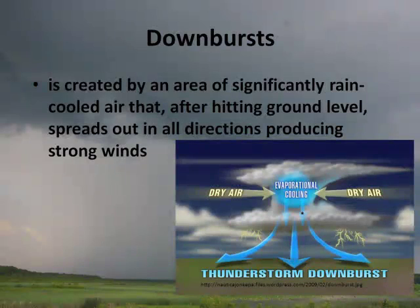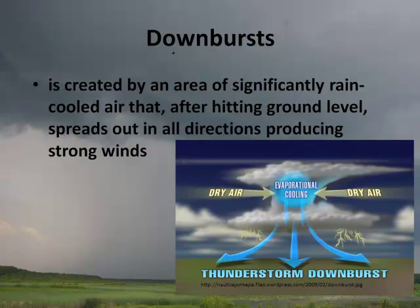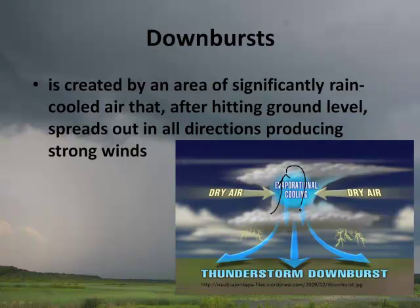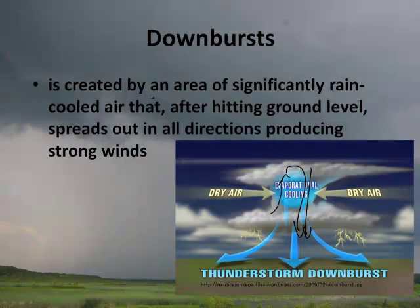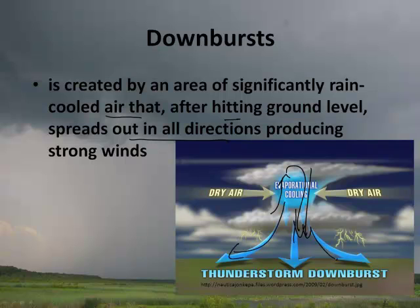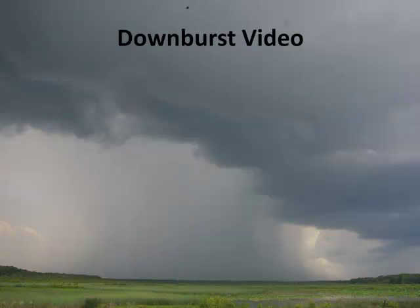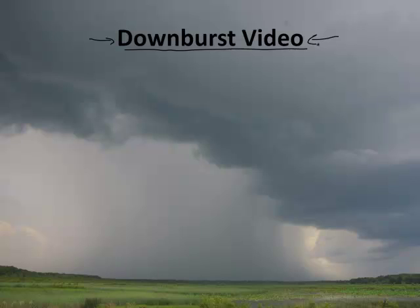There's also something called a downburst. Because you have all this rising air, sometimes air will drop very quickly and cause a huge impact — it can collapse buildings. A downburst is an area of significantly rain-cooled air that, after hitting the ground, spreads out in all directions producing very strong winds. It can just knock things down. Here's a clip from the Dallas Cowboys practice field in Irving, Texas.